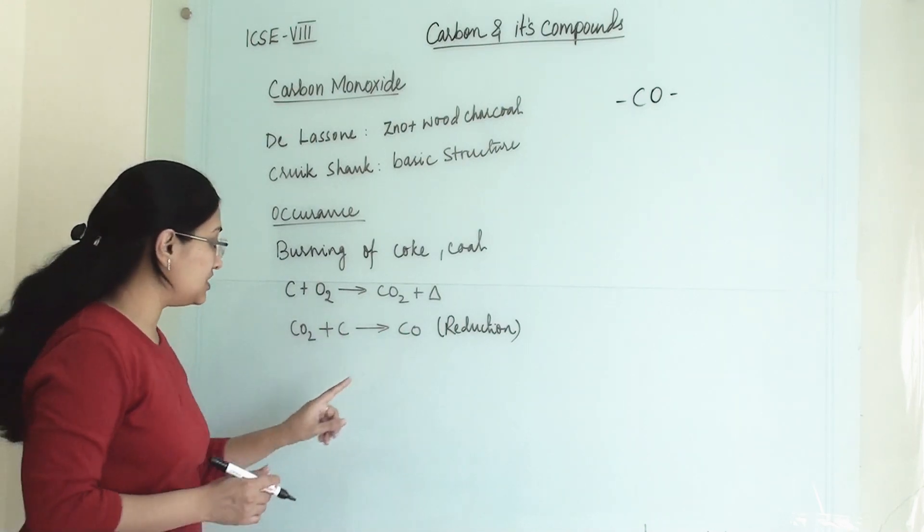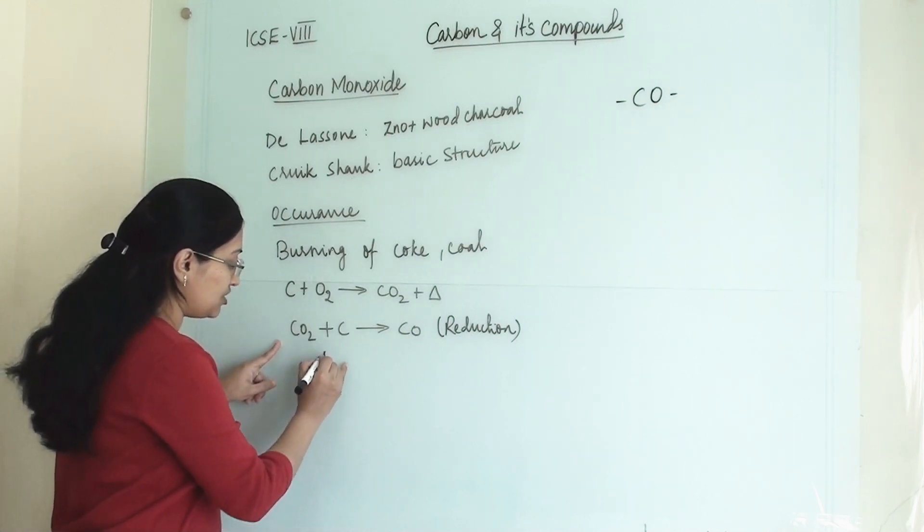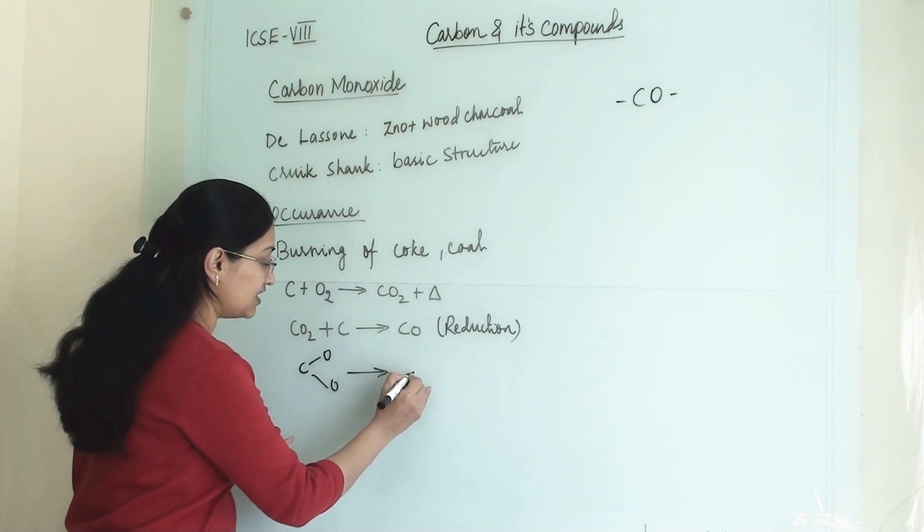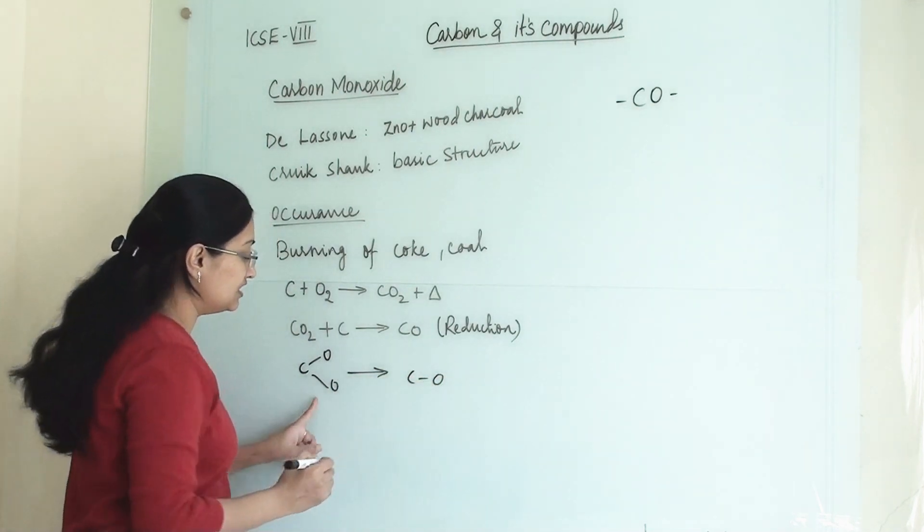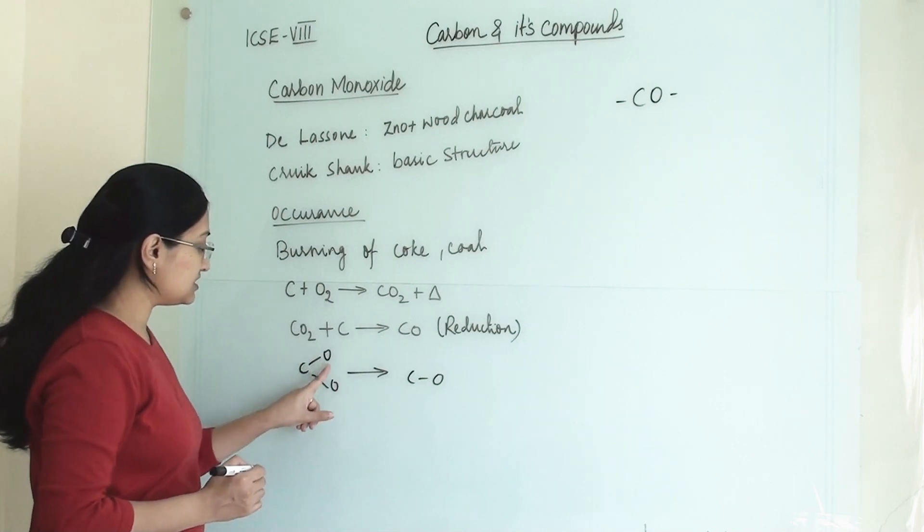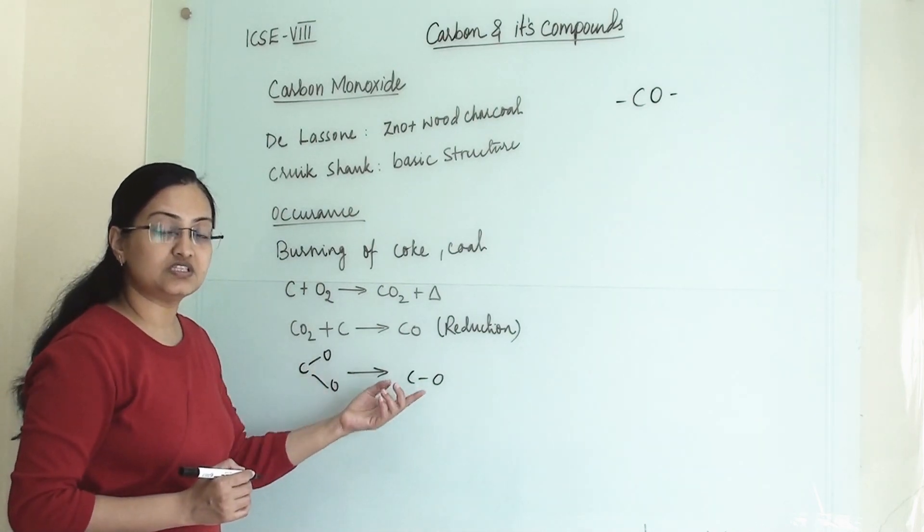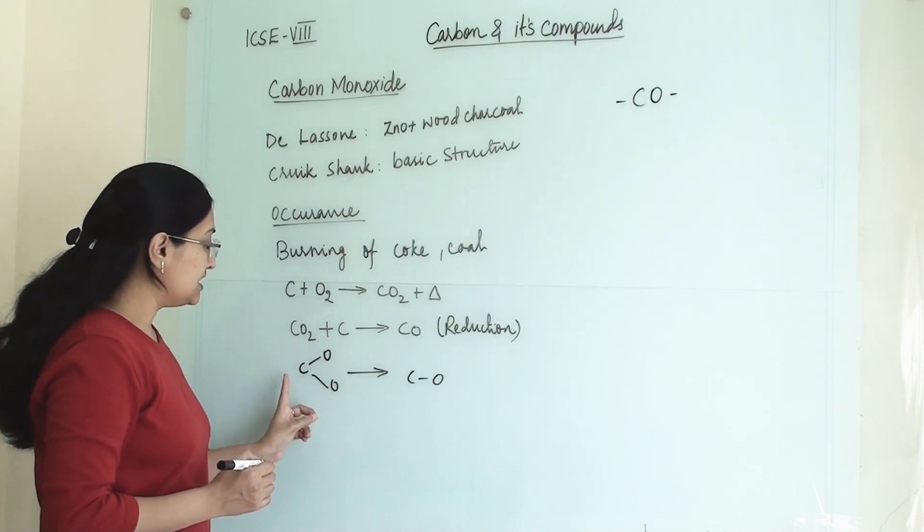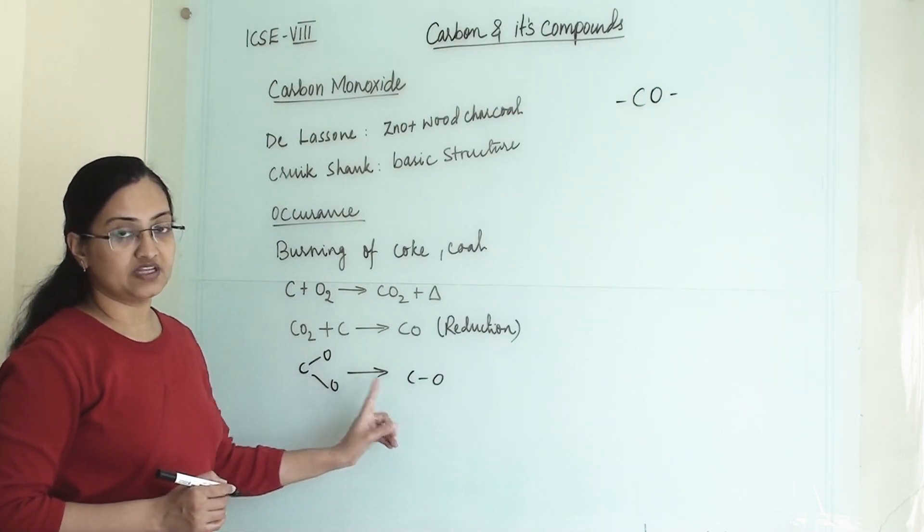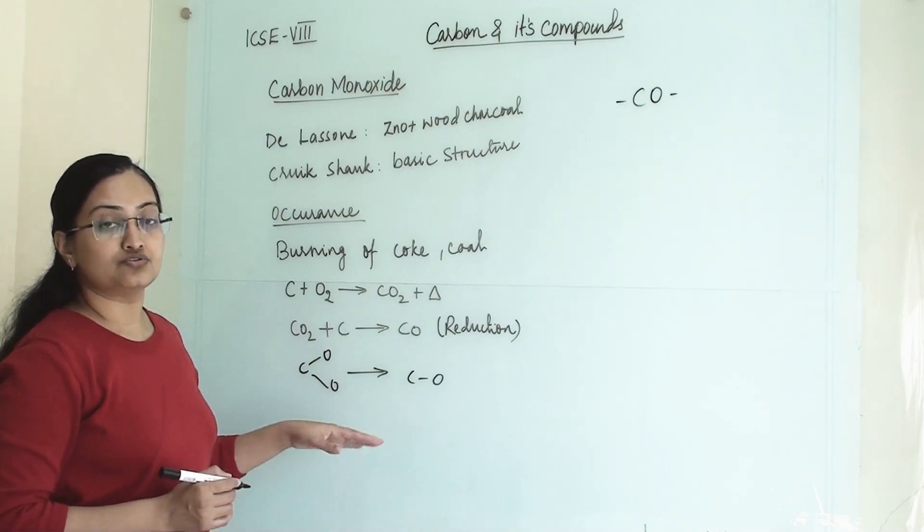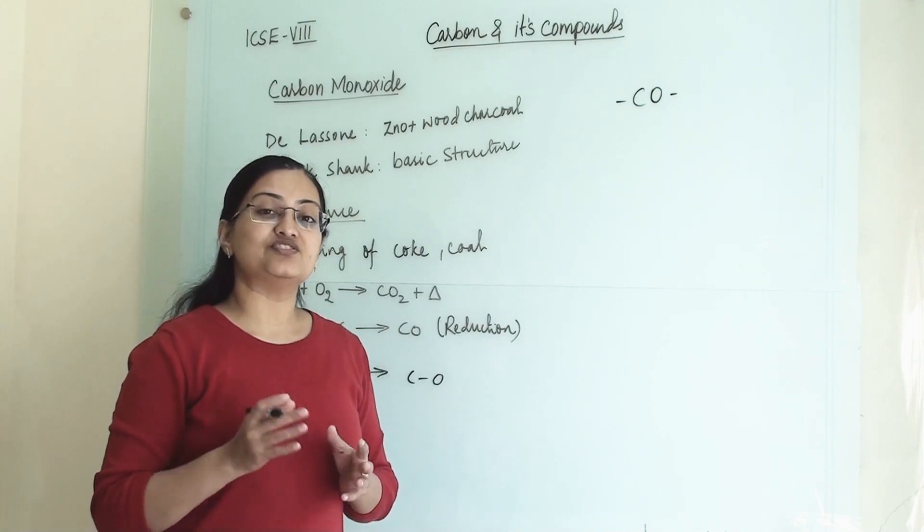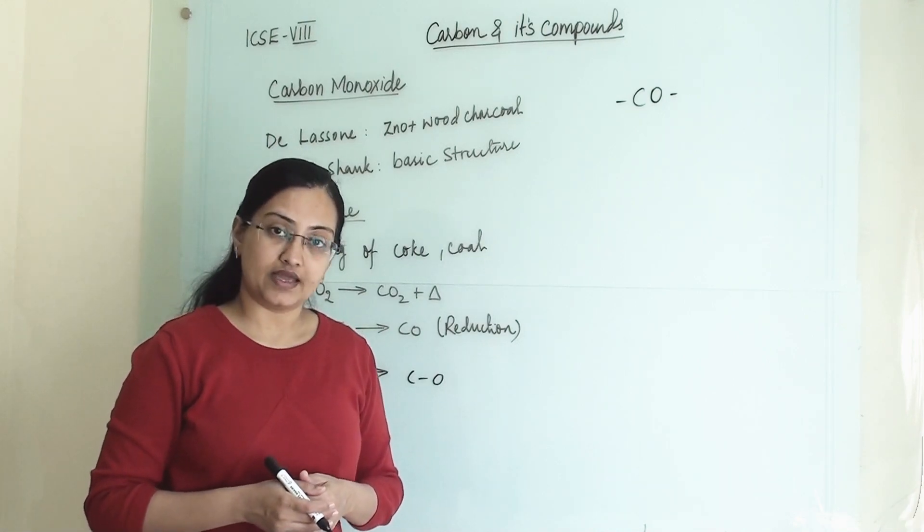Why is it reduction? Because here carbon was attached with two oxygen atoms and after reduction one oxygen has been removed. So here it is CO, here it is CO2. Removal of oxygen is termed as reduction. So further this carbon dioxide is reduced to carbon monoxide and this is a reduction reaction. So all the petroleum products and burning of coke and coal will generate carbon monoxide in the environment.